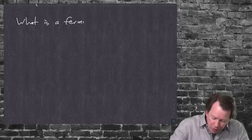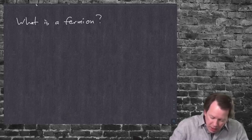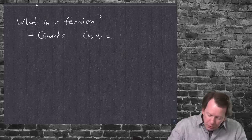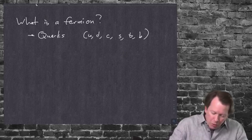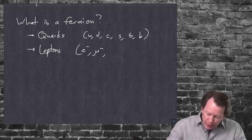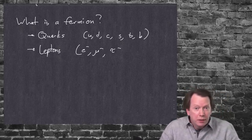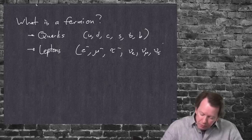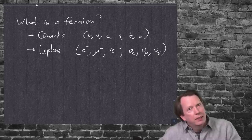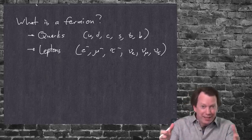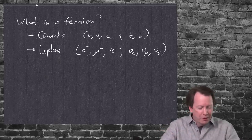The fermions we know are either quarks — up, down, charm, strange, top, bottom — or leptons: the electron, the muon, and the tau. The muon and tau are just heavier cousins of the electron, the same in every other way except mass. Then there are the neutrinos — one for each charged lepton: the electron neutrino, the muon neutrino, and the tau neutrino. These are all the fermions of the standard model of particle physics.